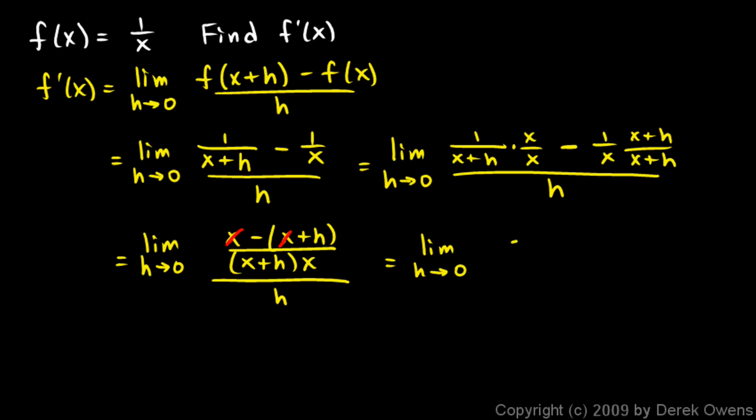So we get a negative h over x plus h times x. And all that is over h.